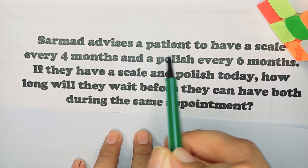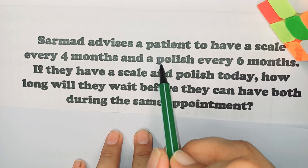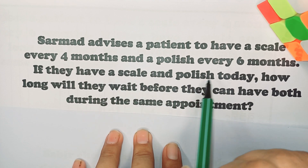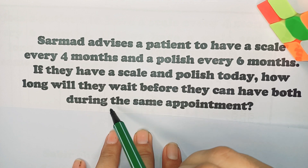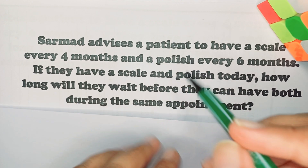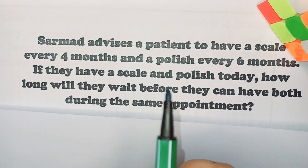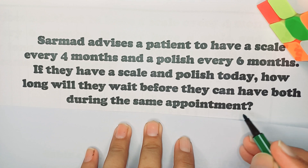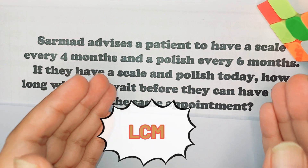One more problem: A dentist advises a patient to have a scale every 4 months and a polish every 6 months. If they have a scale and a polish today, how long will they wait before they can have both during the same appointment? You can now identify this — we need to find when both events happen at the same time again. This is an LCM problem.